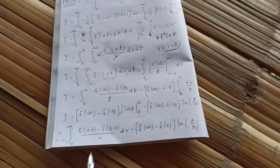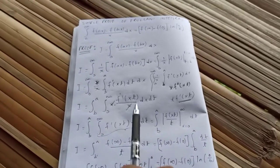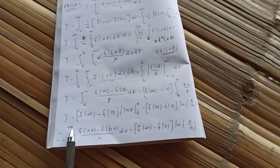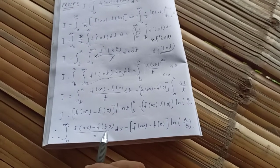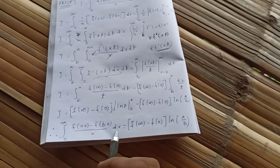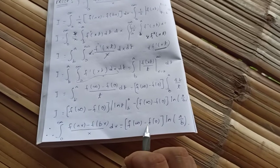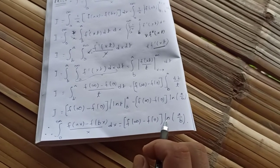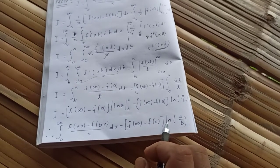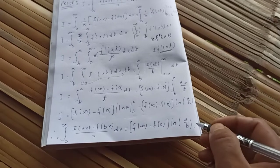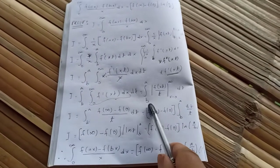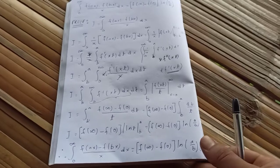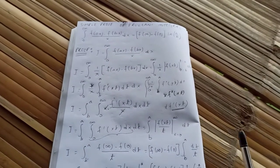Therefore, the Frullani integral equals [f(∞) - f(0)]·ln(a/b). I hope this proof is clear.